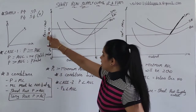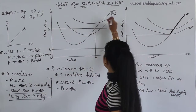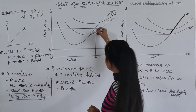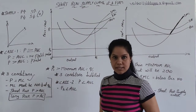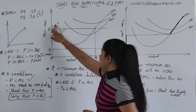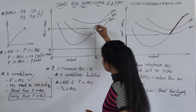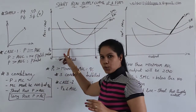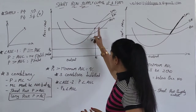At P1, let's confirm all three conditions. First, P equals MC — the SMC curve intersects P1 at two points, so the first condition is met. Second, MC must be non-decreasing at Q0. At the first intersection point, MC is decreasing, so we cannot consider it. At the second intersection, MC is increasing, so we consider that point. Two conditions are done.